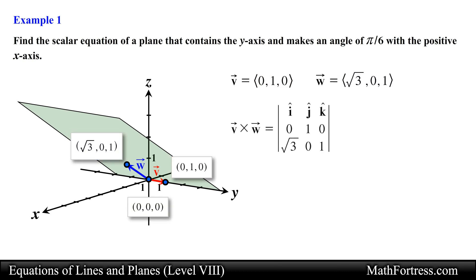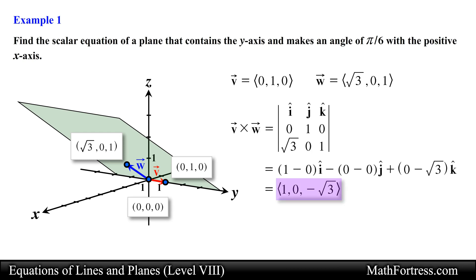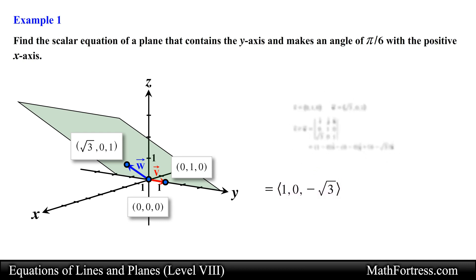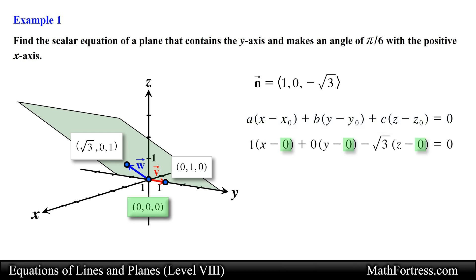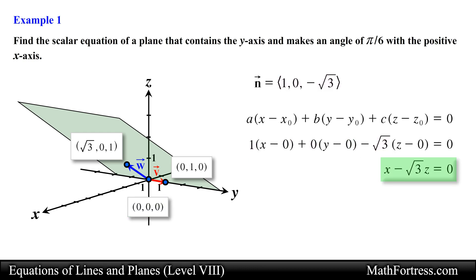Next let's take the cross product of these two vectors by setting up the determinant and expanding by cofactors. Doing that we obtain the following vector, which represents the normal vector of the plane. All that is left to do is to use the coordinates of a point along with the components of this normal vector and substitute them into the scalar equation of the plane. We substitute the coordinates of the origin and the components of the normal vector and simplify, obtaining the scalar equation of the plane as our final answer.